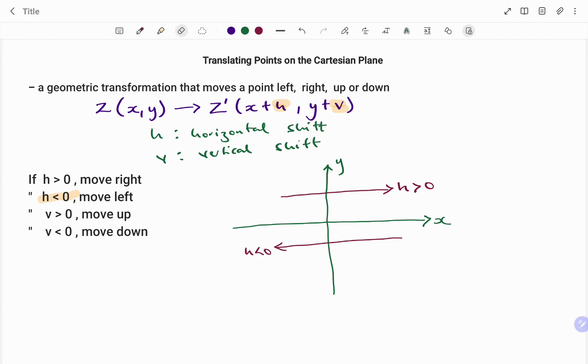However, if the value of my v, that's the vertical shift, is greater than zero, then my point is going to move up. And if the value of v is less than zero, then my point is going to move downward.